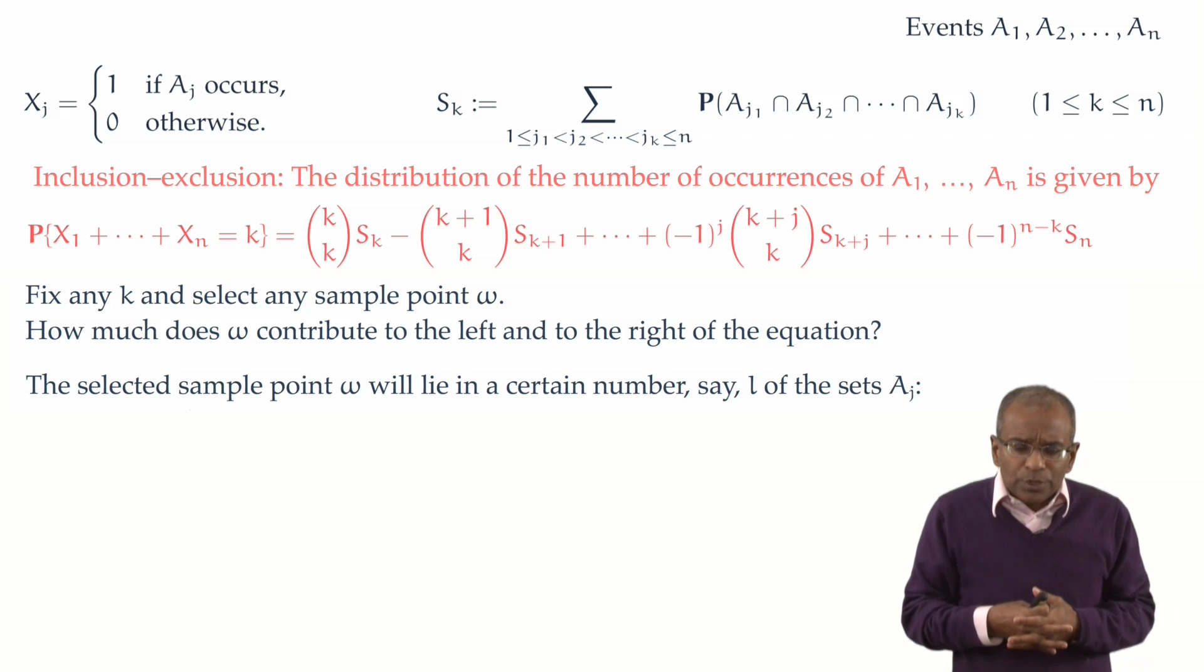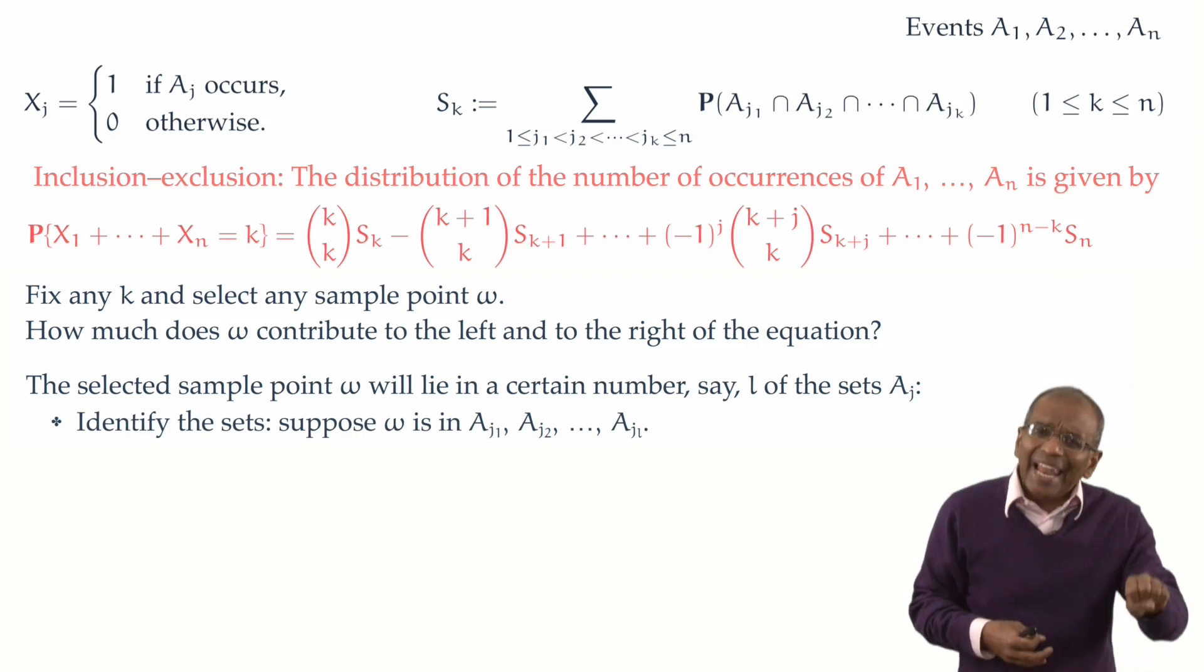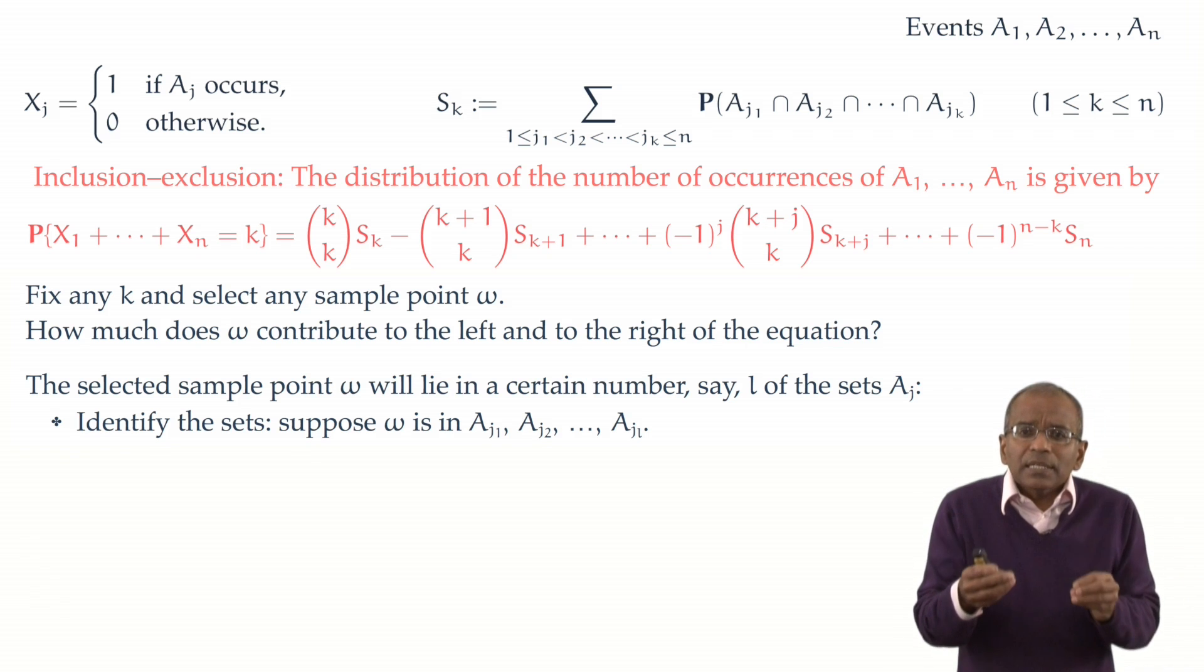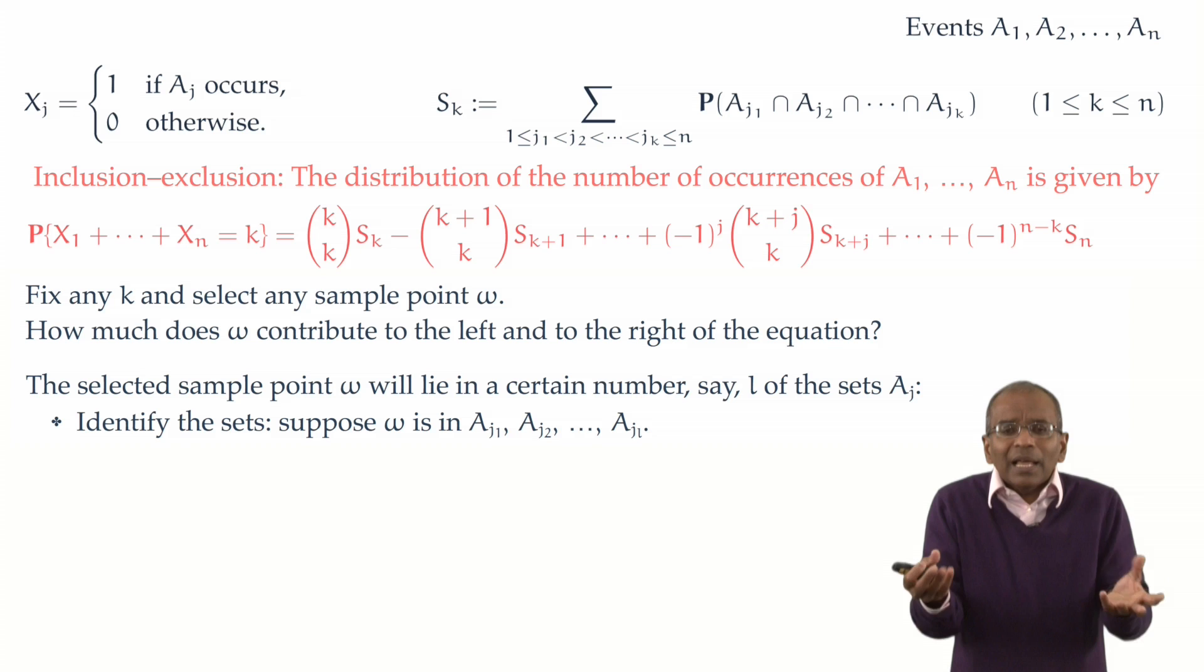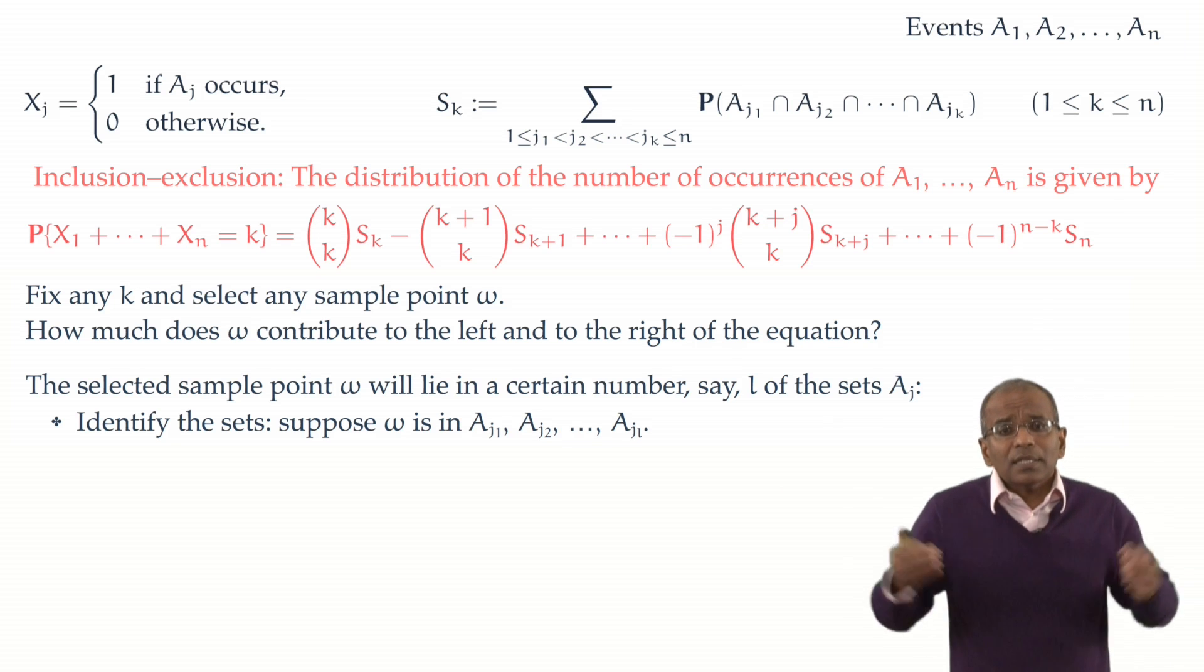Well, let's identify which L of the events this omega actually is in. Of course, I don't know ahead of time which L. Let's give them generic names. Let's say omega lies in the events A sub j1, and also in A sub j2, and so on, and also in A sub jL, and in none of the others.